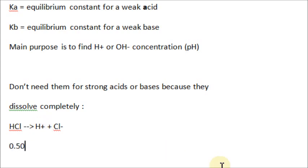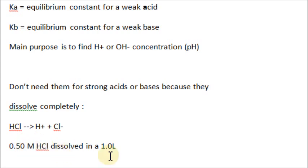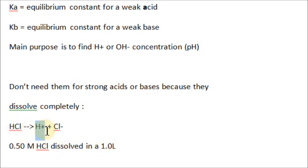Say we had a 0.50 molar hydrochloric acid dissolved in a 1-liter beaker. That means, because of molarity, we have 0.5 moles of HCl, because 0.5 molarity in 1 liter is 0.5 moles. Using the molar ratio, because it 100% goes one way, we can say there's 0.50 moles of H-plus in the solution. That's all you need to do for strong acids — easy.